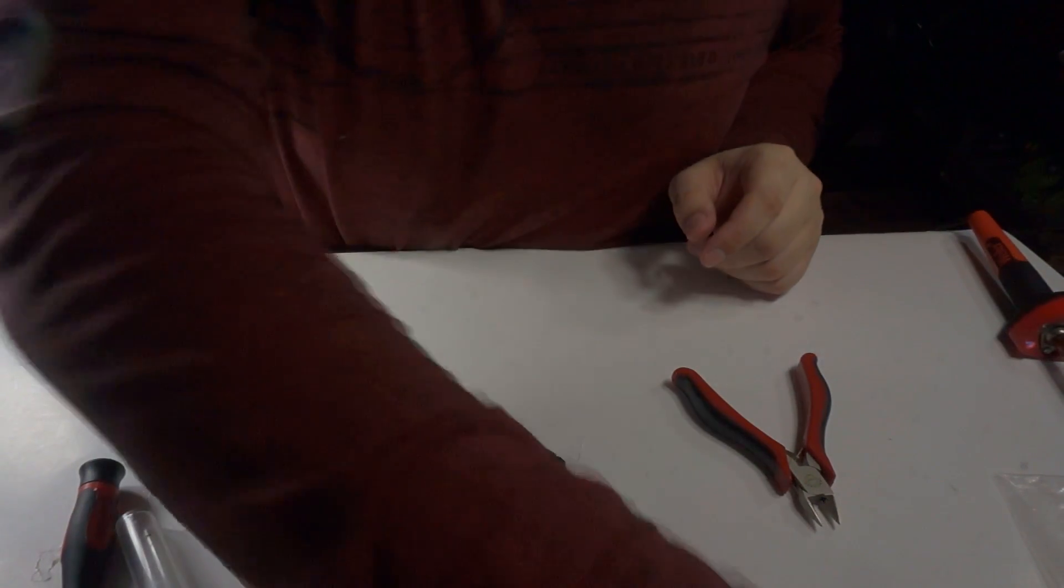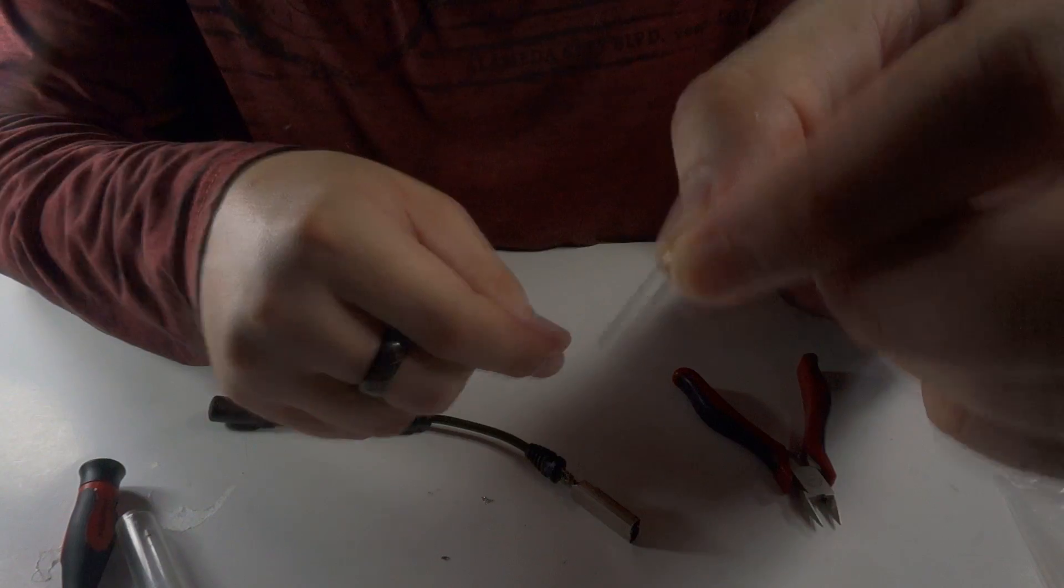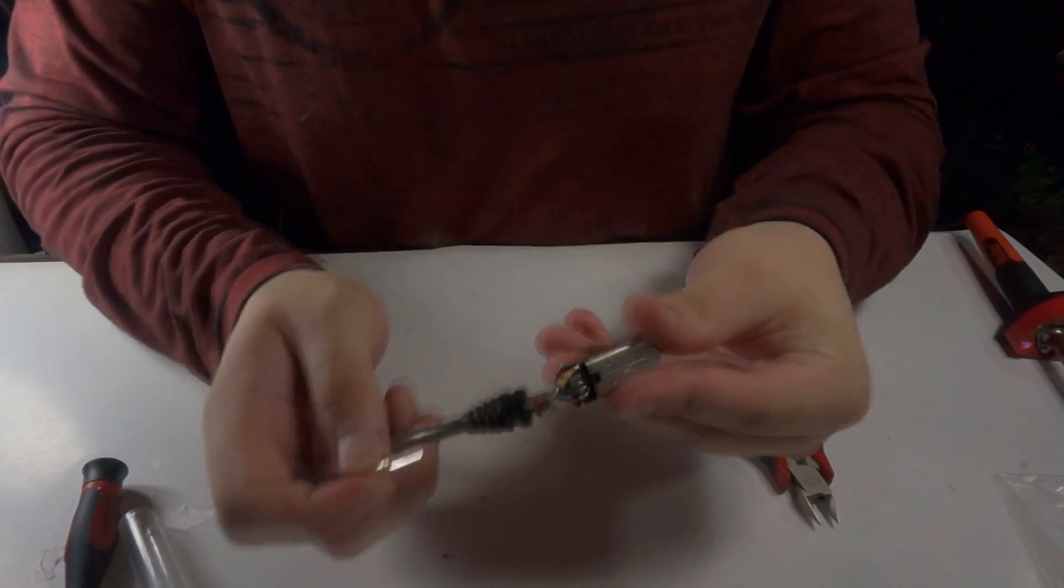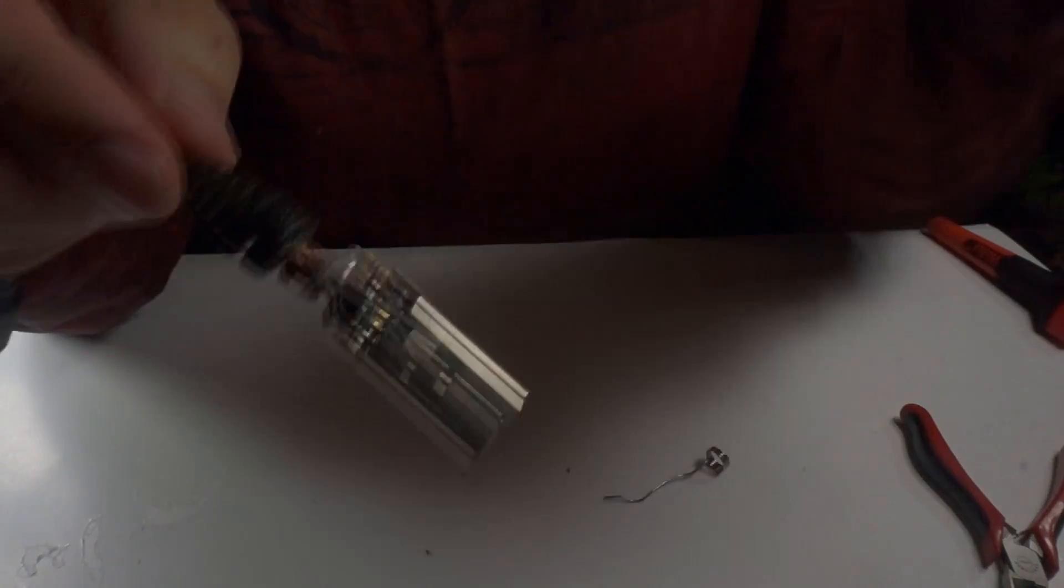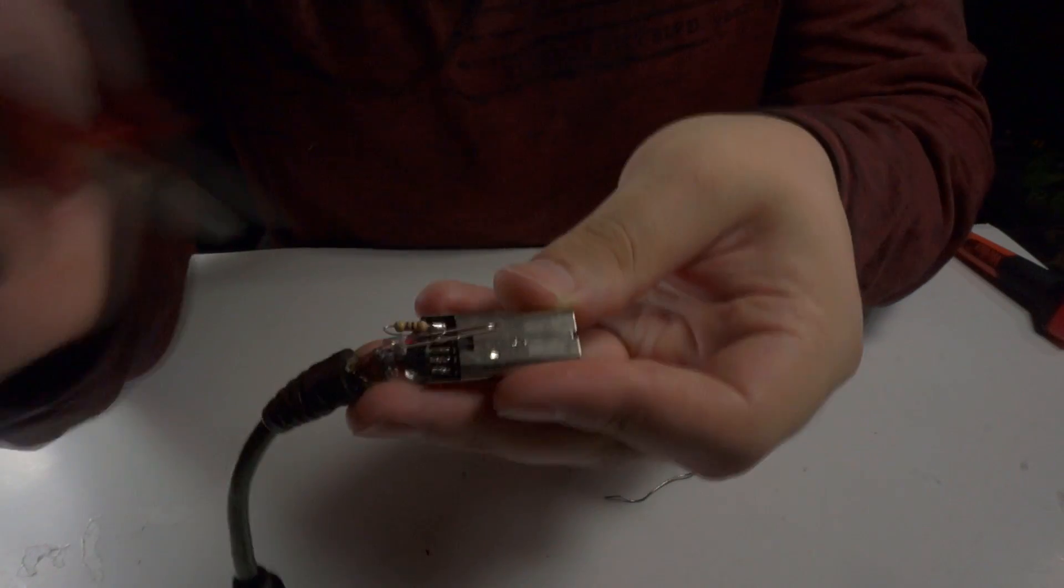Go ahead and grab one of your LEDs and remember that the longer leg is your positive. So you're going to want to connect your longer leg to the other end of the resistor. So go ahead and do that now. Okay, you're going to want to connect it something like this.